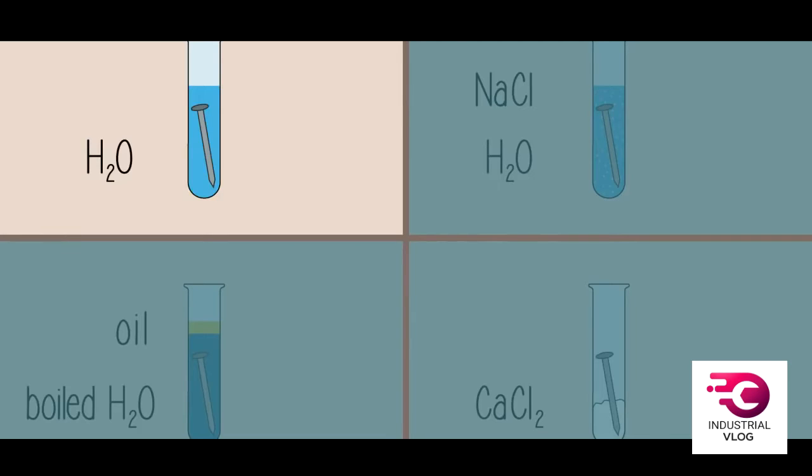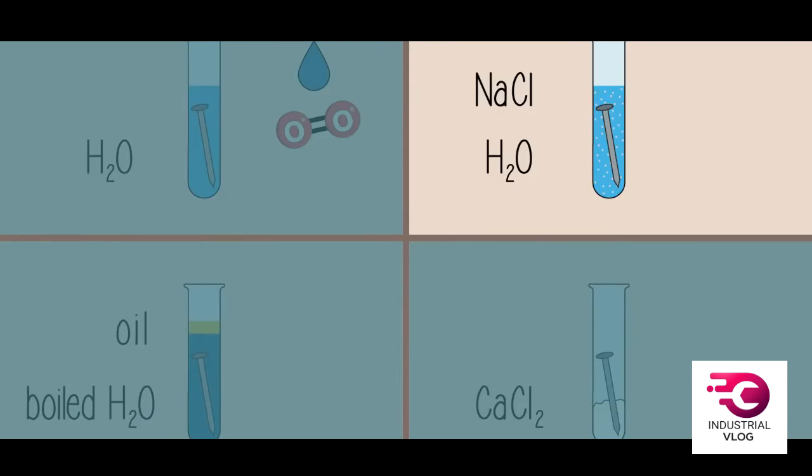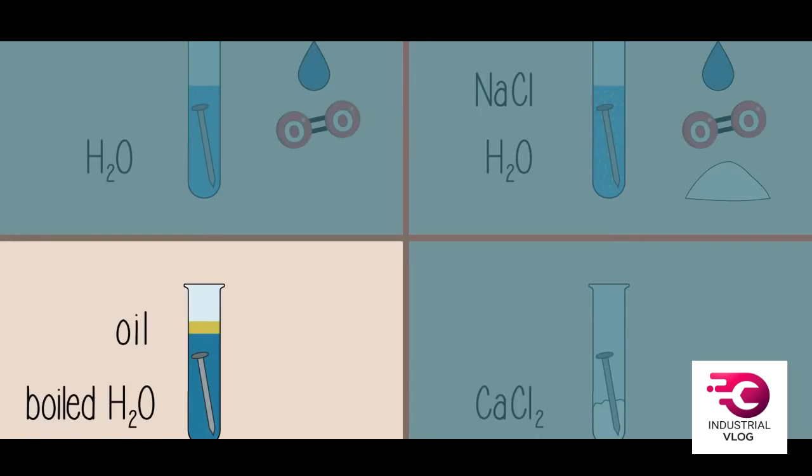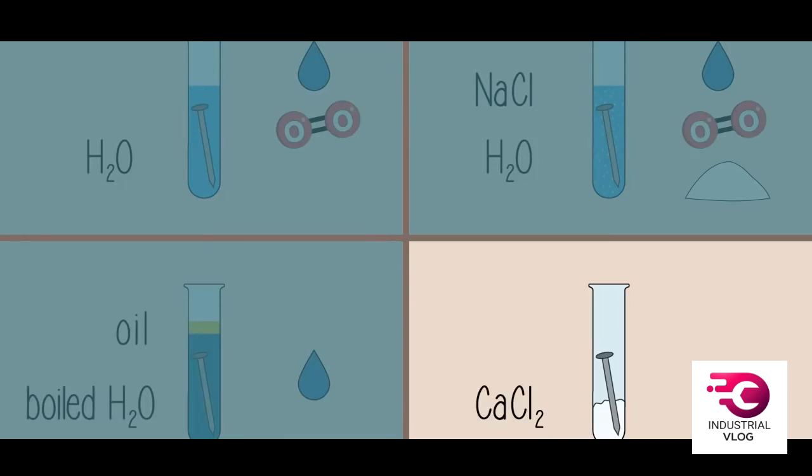So in the first test tube, the nail is exposed to oxygen and moisture. In the second test tube, the nail is exposed to oxygen, moisture, and salt. In the third test tube, the nail is only exposed to water. In the fourth test tube, the nail is exposed only to oxygen.